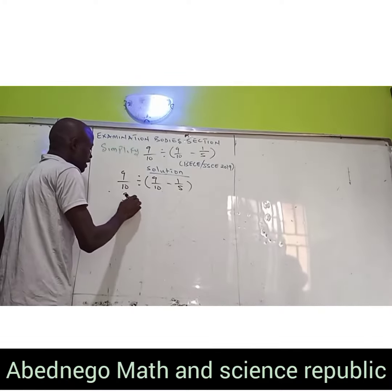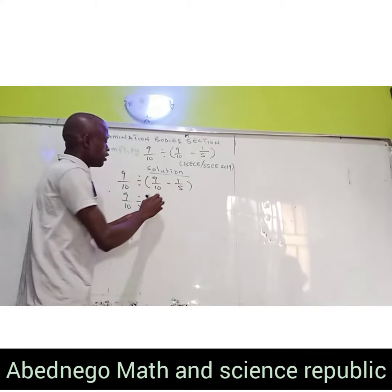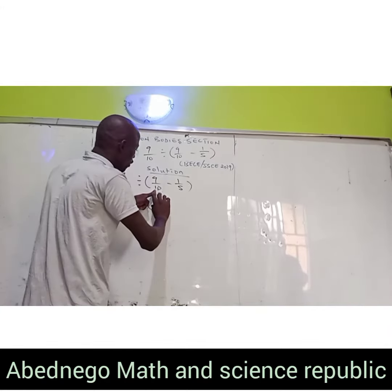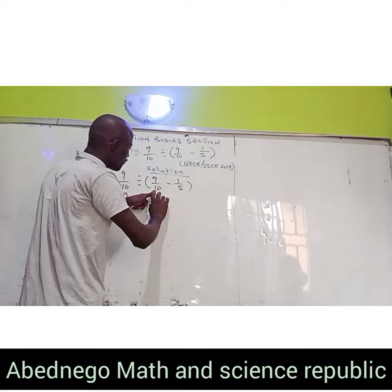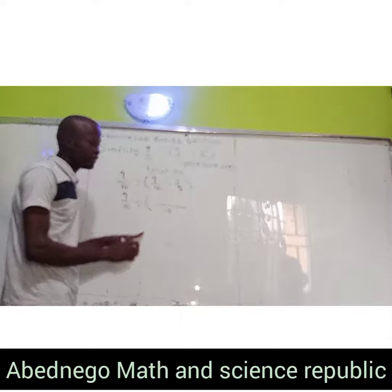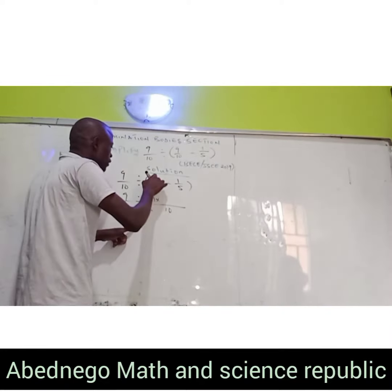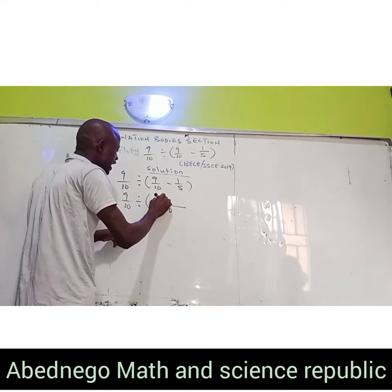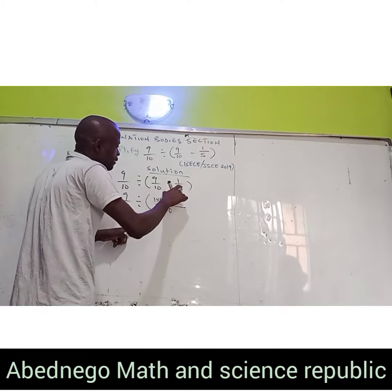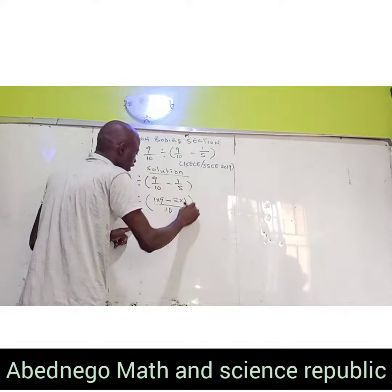We're going to have 9 divided by 10. We handle the bracket first using the rules of BODMAS. We ask ourselves the LCM of the denominators — the denominators are 10 and 5. The LCM of 10 and 5 is 10, because 10 can divide 5 and itself without a remainder. So 10 divided by 10 is 1; 1 times 9. Minus: 10 divided by 5 is 2; 2 times 1.